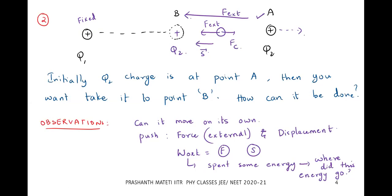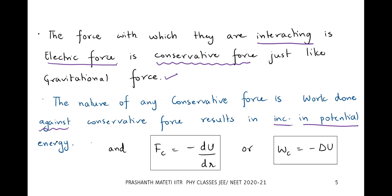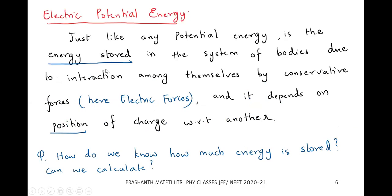The charges are interacting through electric force, and the nature of this force is that it is a conservative force — just like gravitation. Whenever we do work against a conservative force, that energy results in an increase in stored energy, which we call potential energy. Since the electric force is a conservative force, it is always associated with some potential energy.